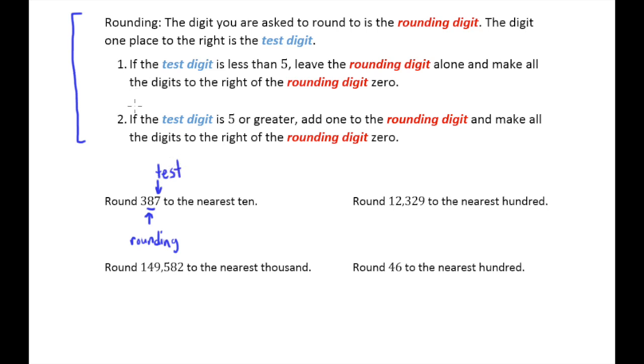Now it gives us two different scenarios here. It says if the test digit is less than five, leave the rounding digit alone and make all the digits to the right of the rounding digit zero. Number two says if the test digit is five or greater, add one to the rounding digit and make all the digits to the right of the rounding digit zero.